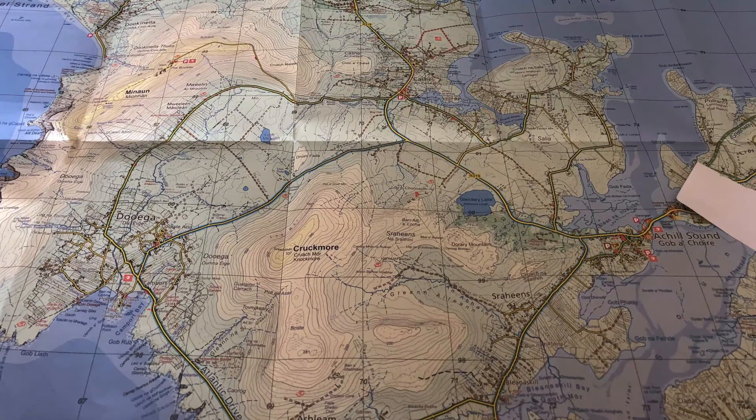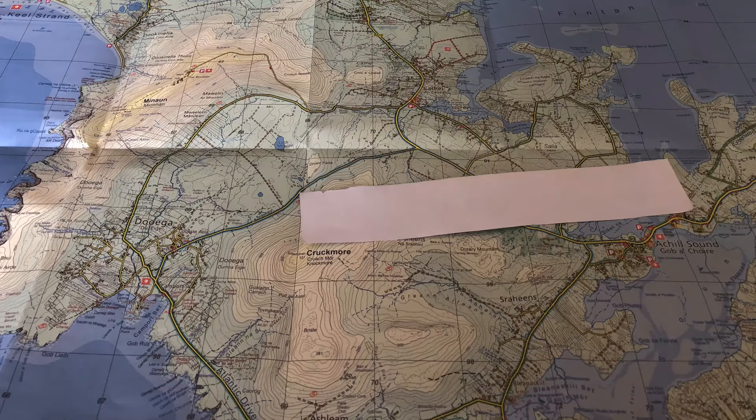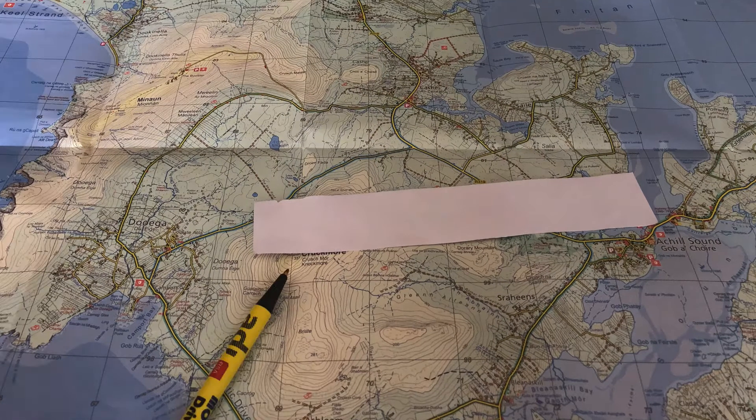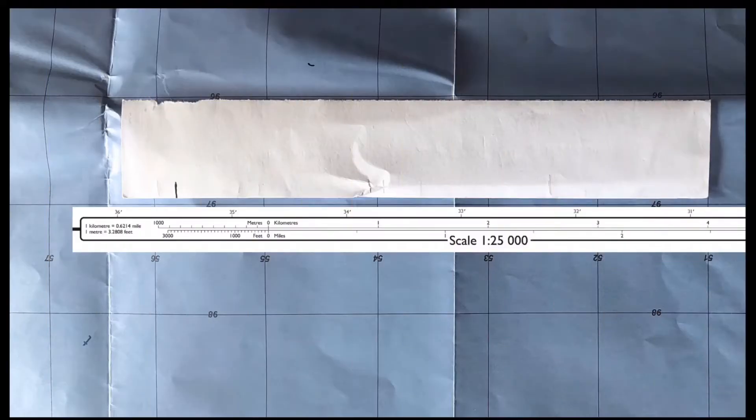But the simplest and most foolproof option is actually just using a blank piece of paper. Put the corner where we want to start and just mark off with a pen where we want to go. We then compare this to the scale bar on our map, putting the notch we've marked in line with the graduated area and then adjust on the end so it lines up with a full kilometre. When we look at it here we can see that we've got a distance of 4.8 kilometres.